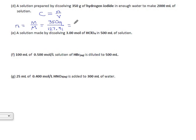350 divided by 127.91, 2.736 according to my trusty calculator, moles of HI. So that means our concentration is 2.736 moles of HI divided by 2000 milliliters, which means 2 liters. So that's 1.368 moles per liter HI.